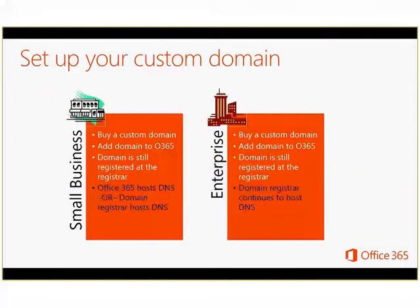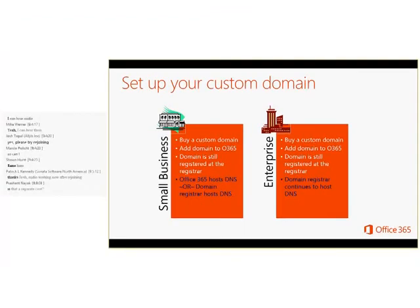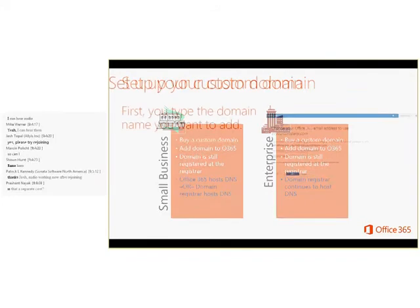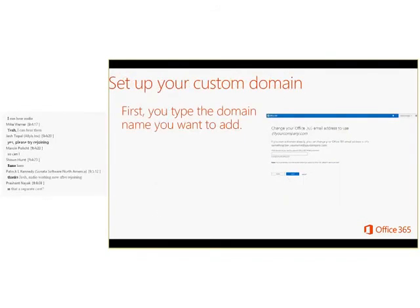The way you set up your domain is a little different for small business and enterprise, though the processes are very similar. If you're a small business, you can have Office 365 manage your DNS for you and get the records set up. If you're an enterprise or a small business that prefers it, you can manage that DNS yourself. Small business has the option to let Office 365 do that setup, whereas in enterprise you'll always need to do it yourself. You start the process the same way — you type in the domain name you want to use.